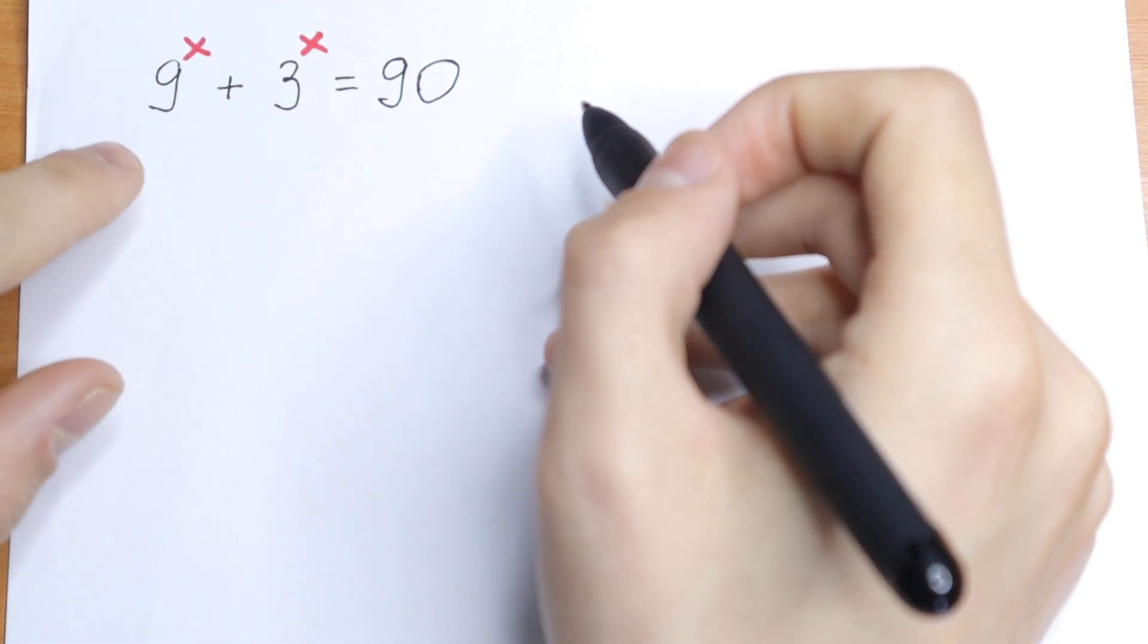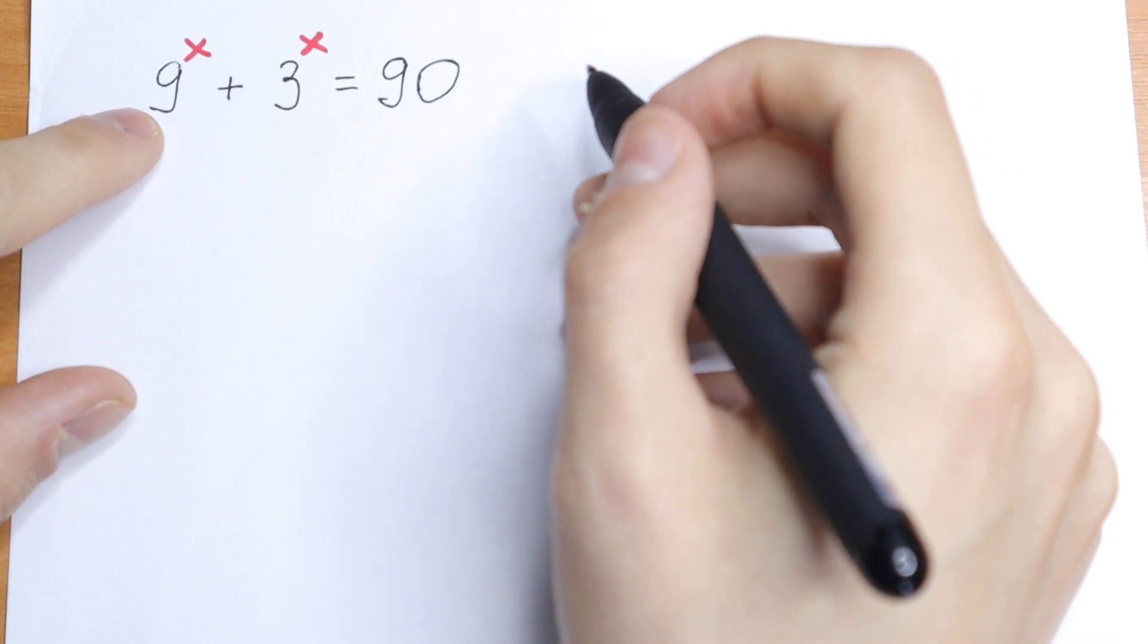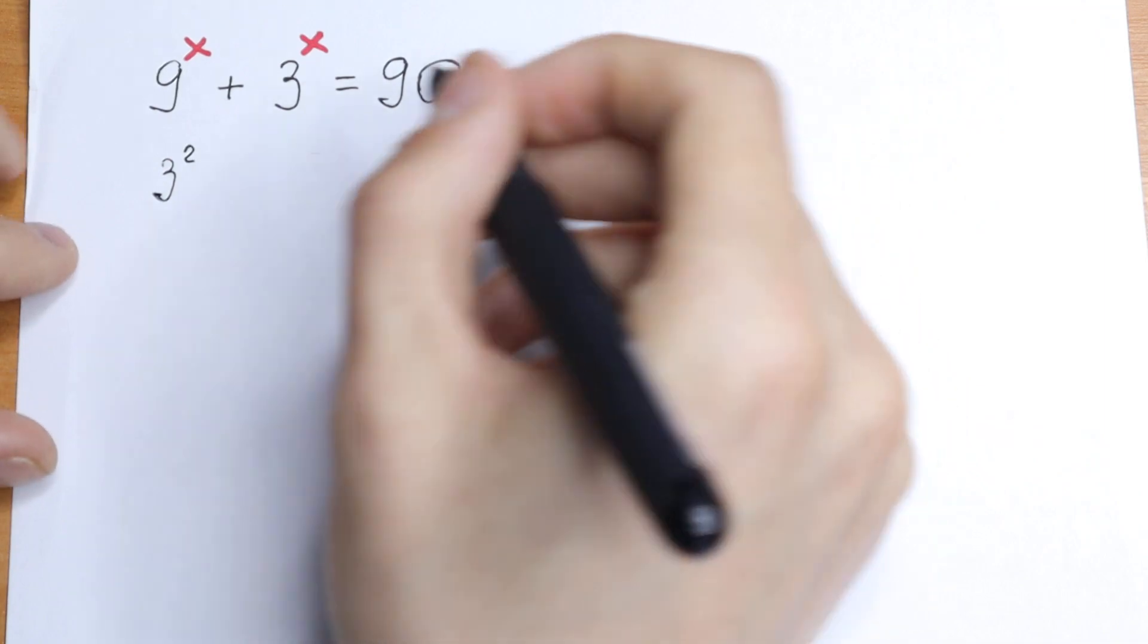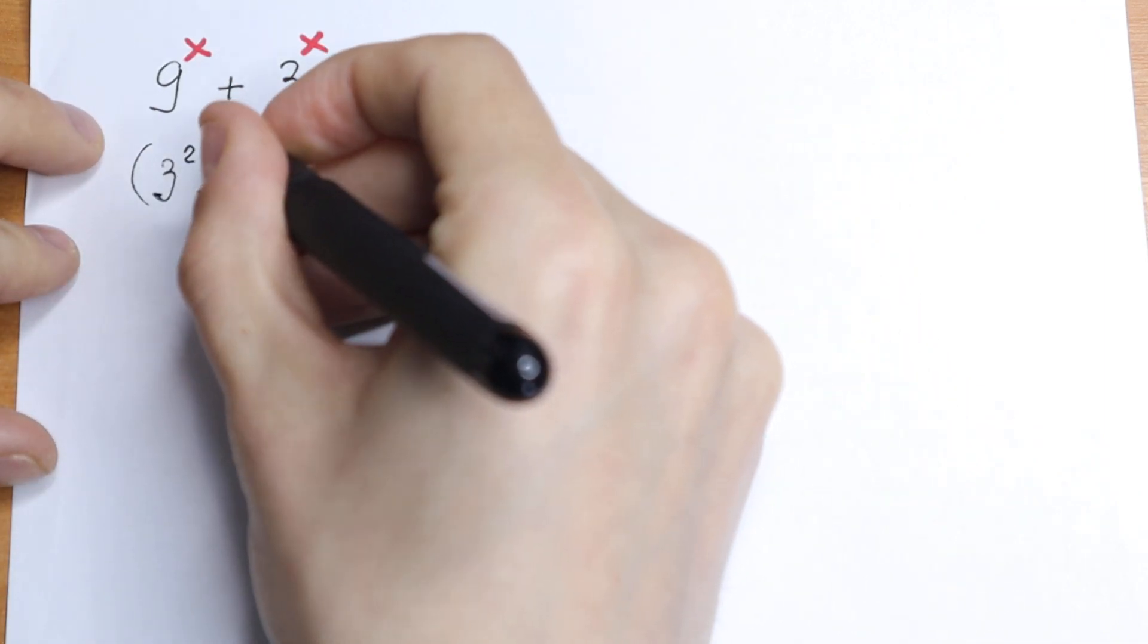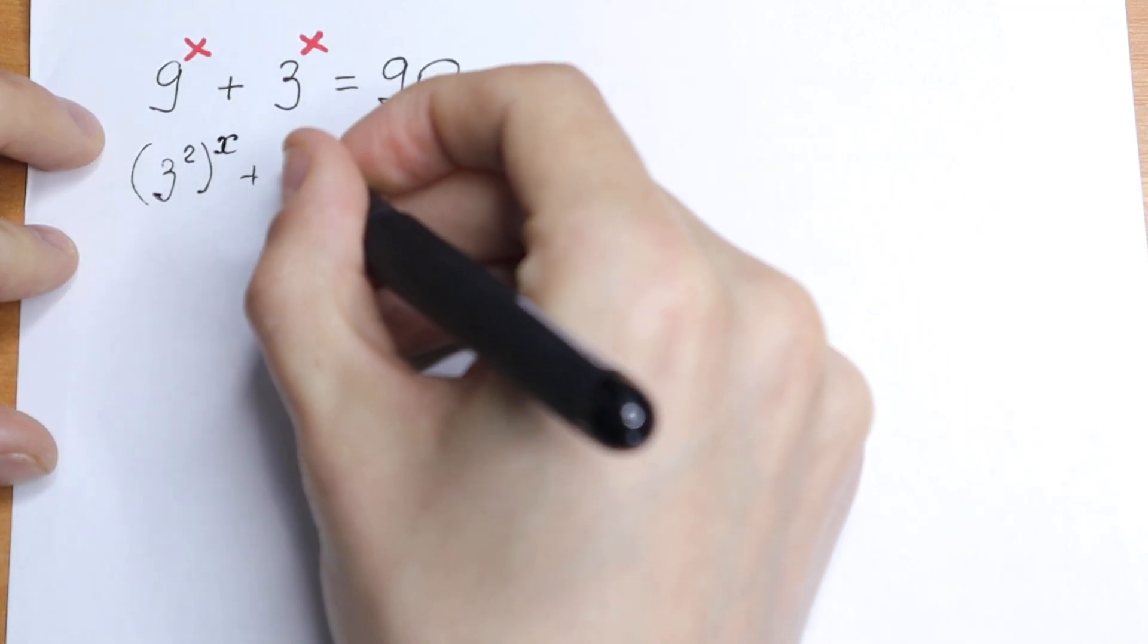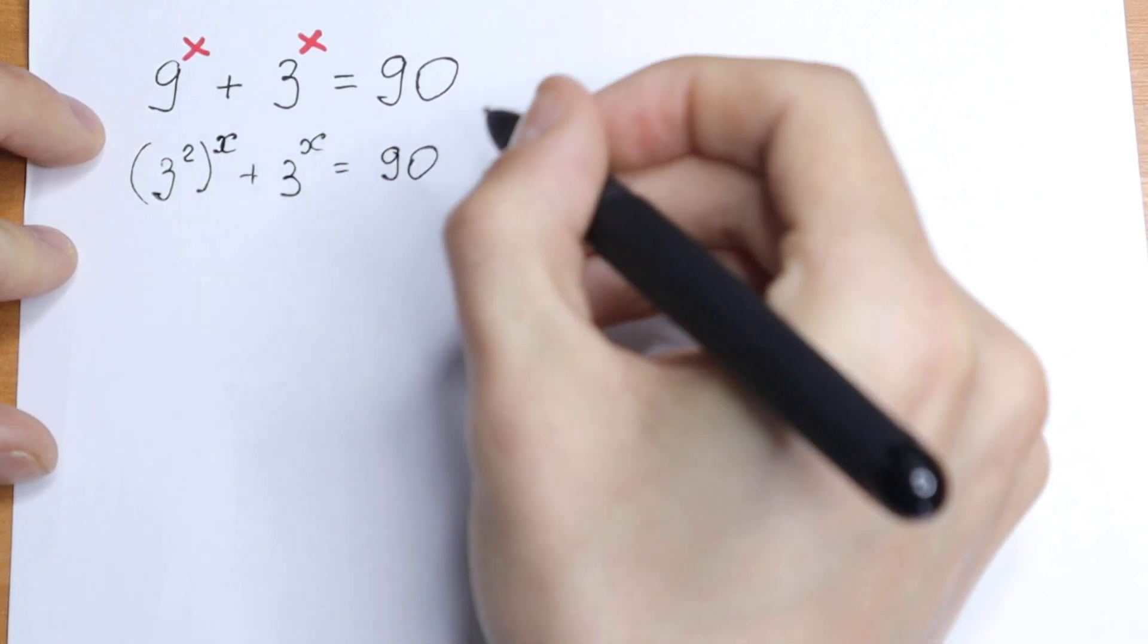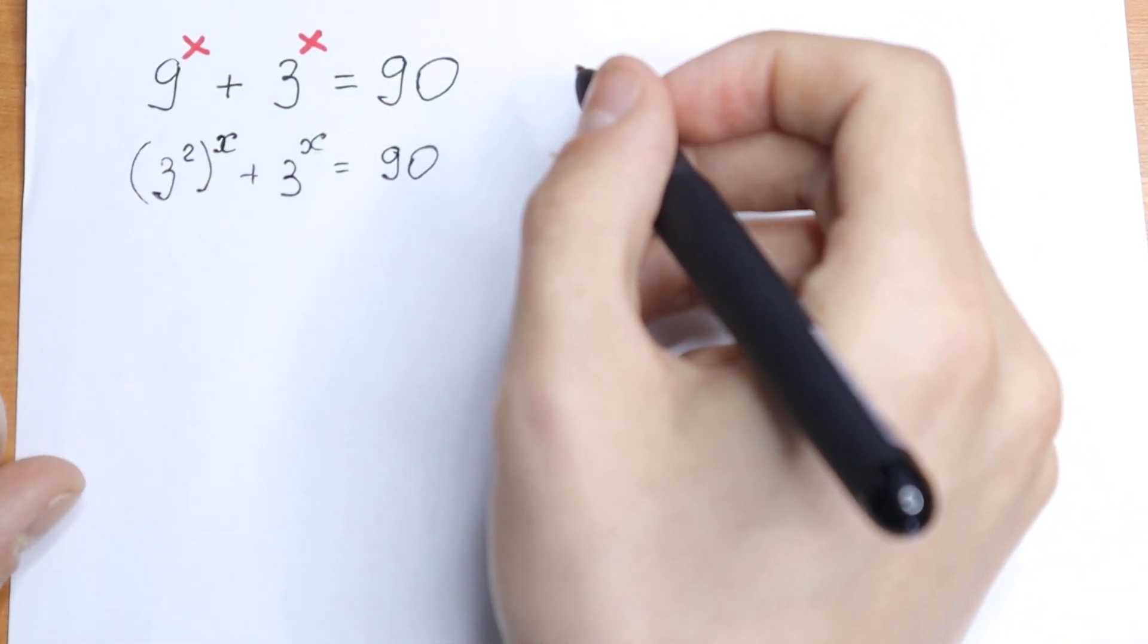We can create base of 3 right here. We can write this 9 as 3 squared. So let's do this. We will have 3 squared instead of this 9 and raised to the power x. This is the same plus 3 to the power x and equal to 90. So we just write this 9 as 3 squared.